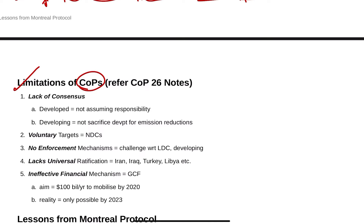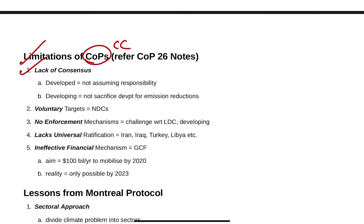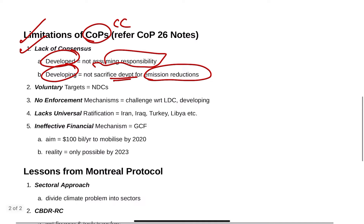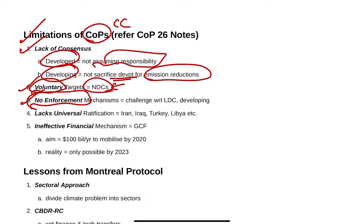The limitations of the COPs with respect to climate change compared to the Montreal Protocol: first, lack of consensus — developed countries are not assuming responsibility whereas developing countries don't want to sacrifice development for emission reductions. Next, targets are all voluntary — nationally determined contributions — and no enforcement mechanisms exist with respect to developed and developing countries, which is a huge problem.